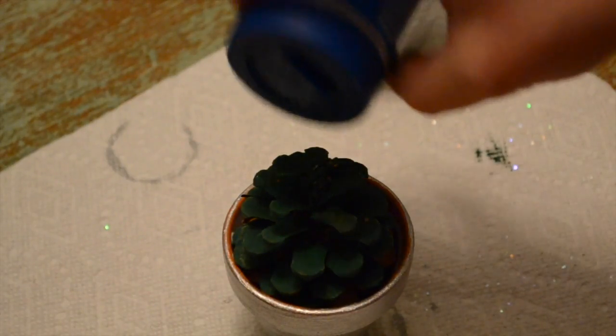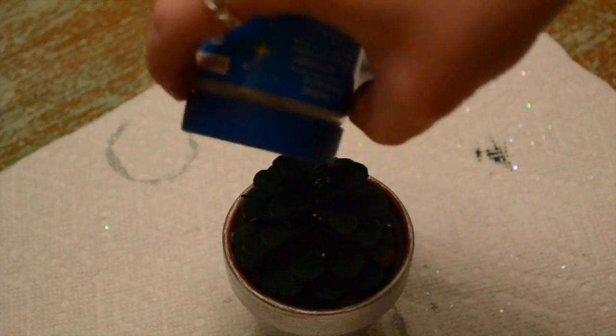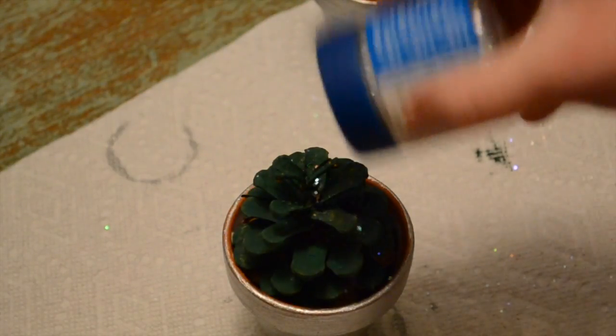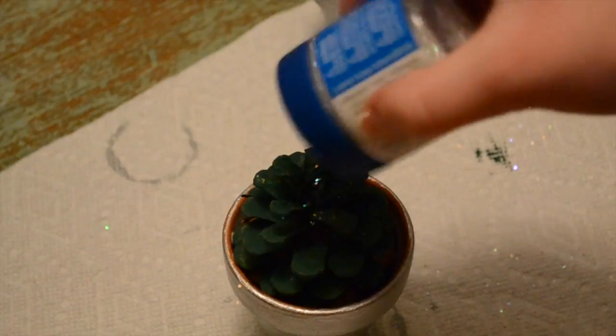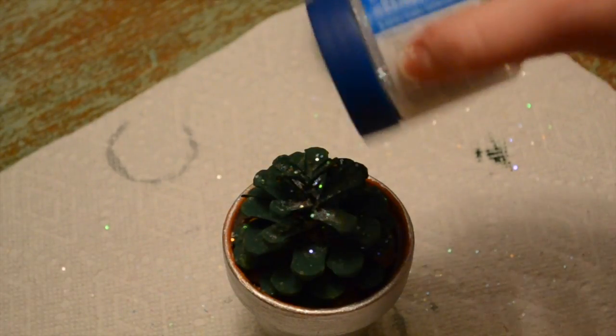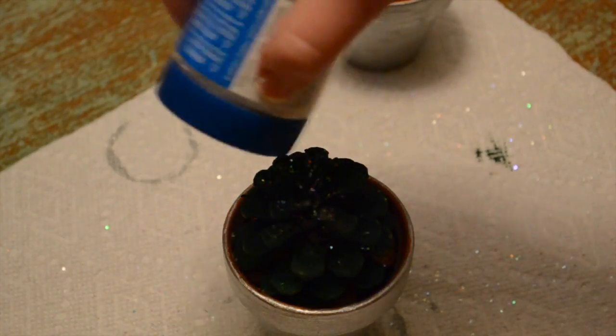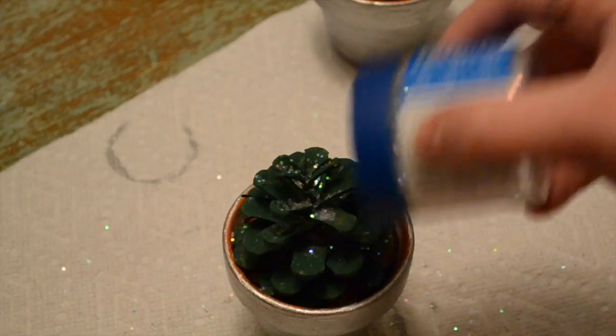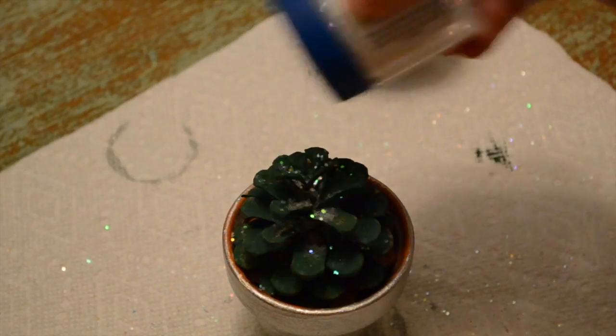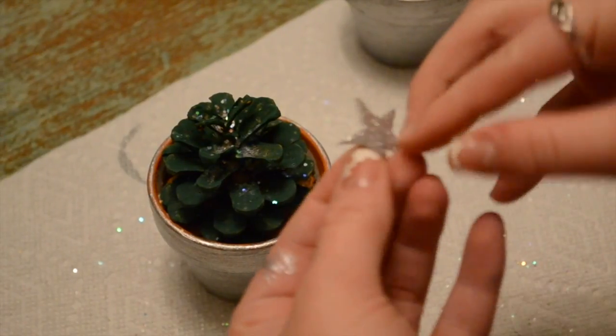Next take your glitter and start to sprinkle them on top of the pinecone. And continue this until the glitter is to your liking and both of them are done. Then take a foam star and place it at the top of the pinecone.